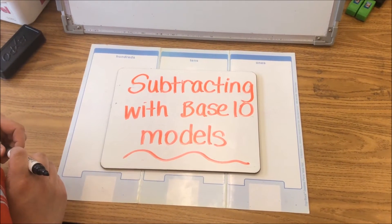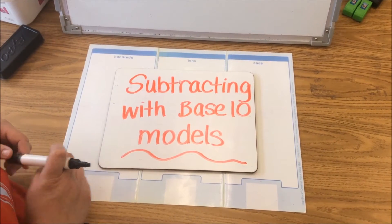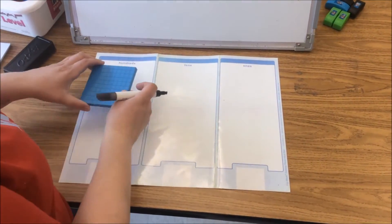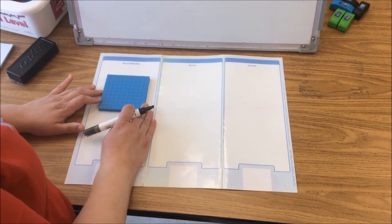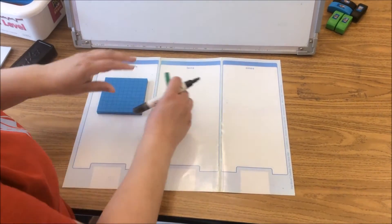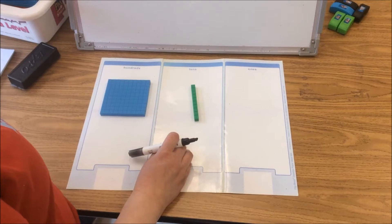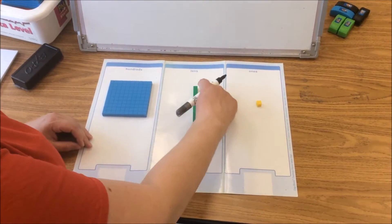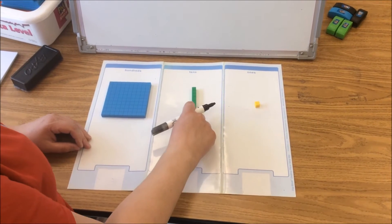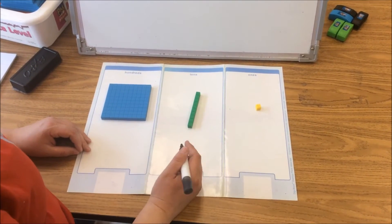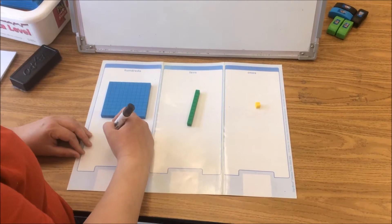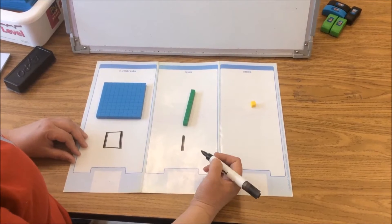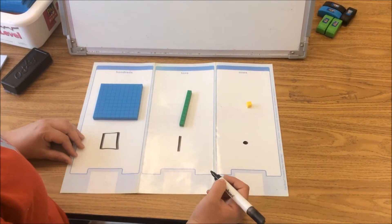Today we're going to demonstrate subtracting with base-10 models. For just a review, students in school use these blocks to show hundreds, this rod to show a 10, and this small cube to show a 1. There are 10 ones in a 10 rod and there are 10 tens in a 100s block. We model that in school by drawing a square for the 100s block, a straight line for the 10s rod, and a small circle for the 1s.